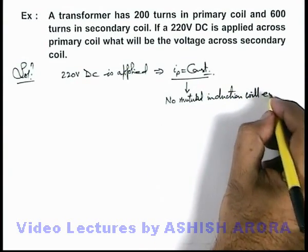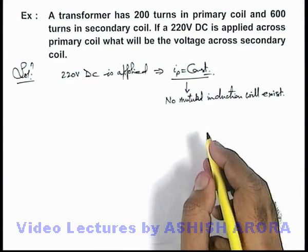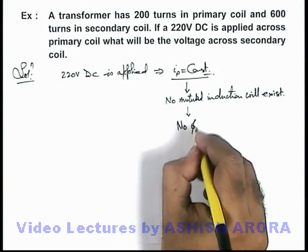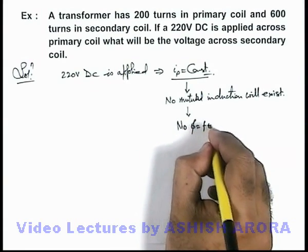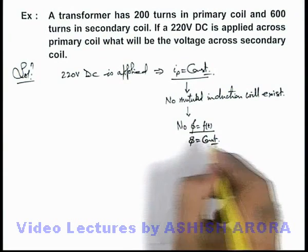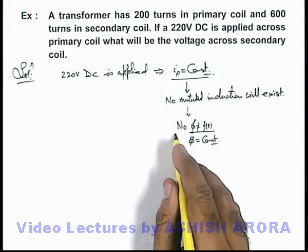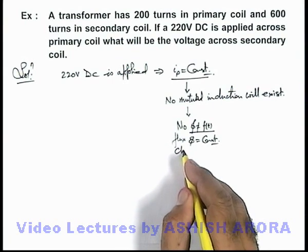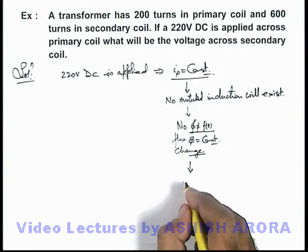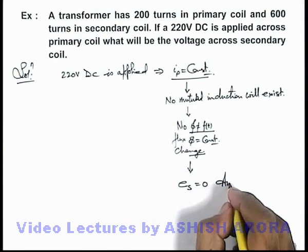If no mutual induction exists, that means there is no flux variation — phi is constant and not changing with time. So no flux change implies there will be no induced EMF in the secondary coil. Therefore, the EMF induced in the secondary coil will be zero in this situation.